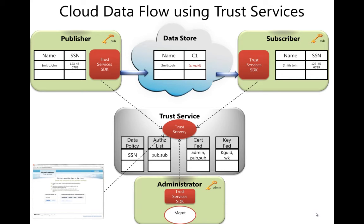In this example, the publisher would like to publish sensitive data to the cloud, represented by a social security number. You see in the middle here that we have changed the social security number to 'E' and a GUID — those are all results of using Trust Services to encrypt the data. On the subscriber or data consumer side, that data will be downloaded from the cloud and then decrypted in that trusted environment before the data can be read.